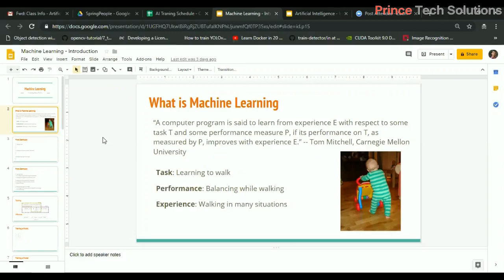Here's a small example: a baby trying to walk in different situations. We can consider learning to walk as the task. The performance is how the baby is balancing while walking in different situations. The experience is walking in different situations. This is similar to data - we give data in different situations so the algorithm will learn accurately and give good performance. That is what machine learning is.